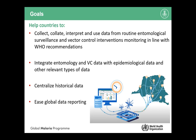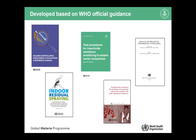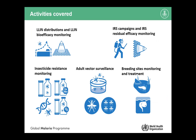As WHO we often ask countries to report data to us on an annual basis to monitor global progress, and we wanted to make it easier for countries to report this data. All of the standard DHIS2 modules are developed based on WHO recommendations and these are the documents in which you can find recommendations for data collection or for monitoring interventions. Currently the modules cover most activities conducted within entomology and vector control: LLIN distributions and LLIN bioefficacy monitoring, IRS campaigns and IRS structural efficacy monitoring, insecticide resistance surveillance, vector and breeding site monitoring, larvicide treatment, and more.